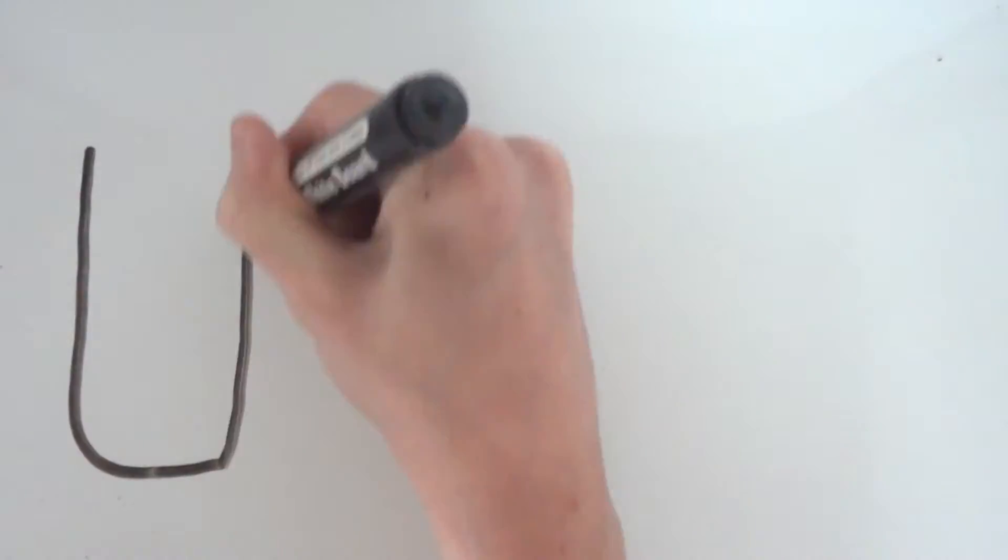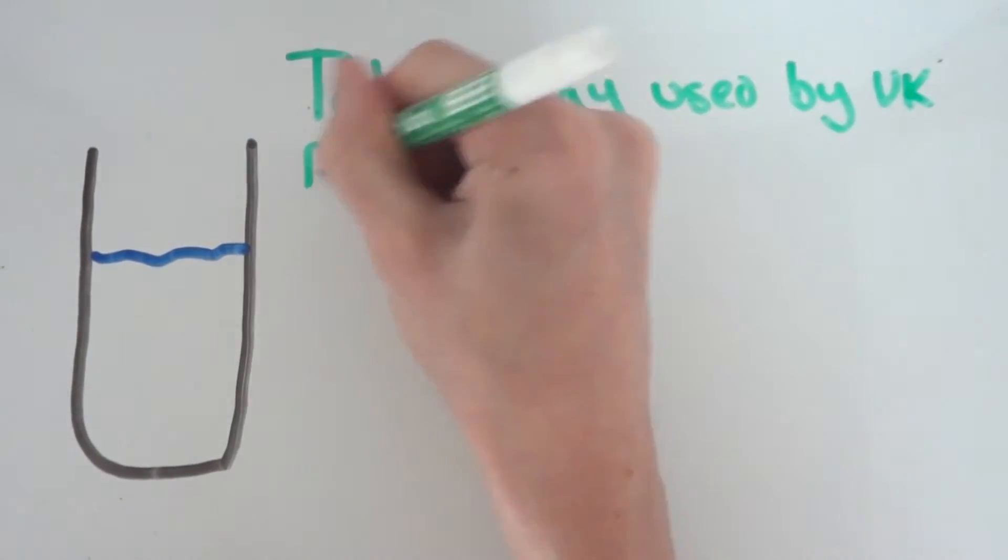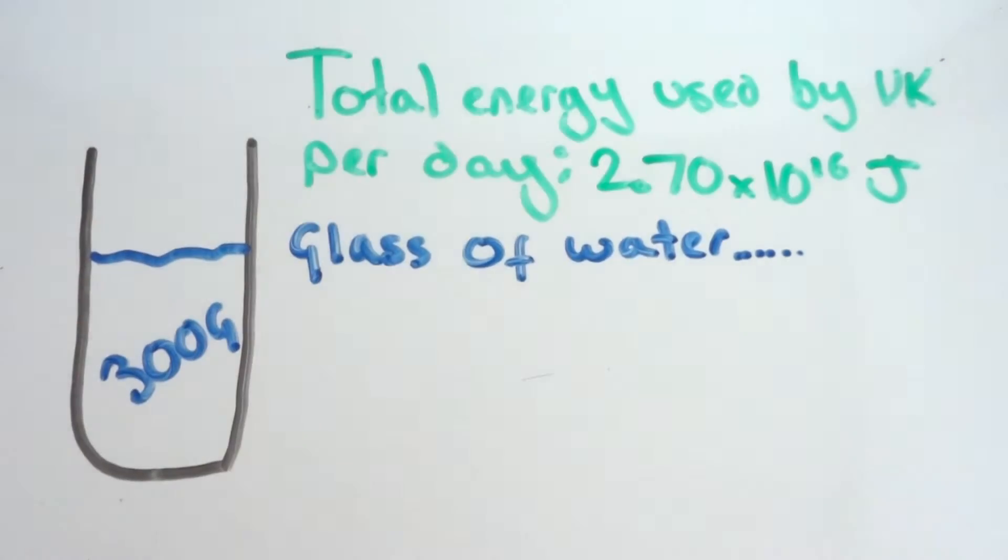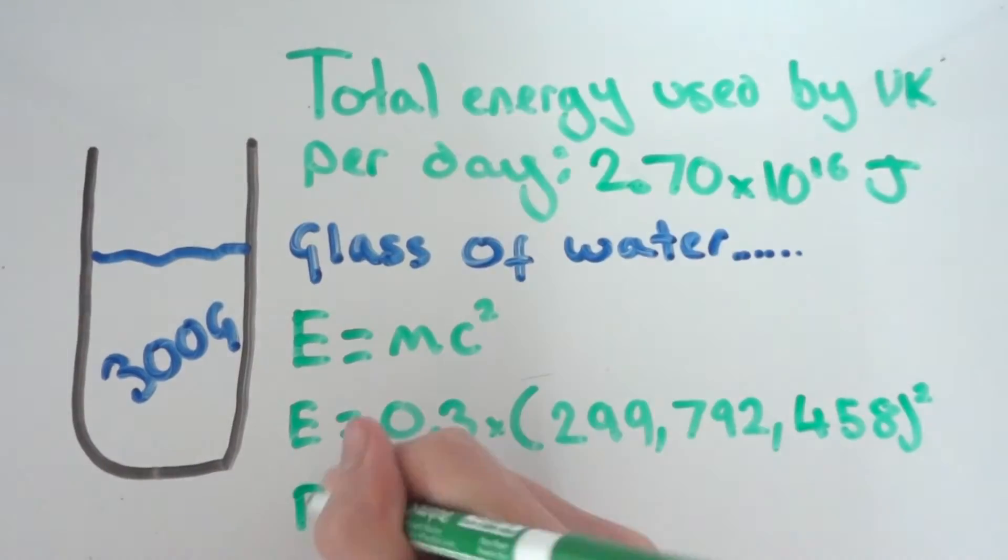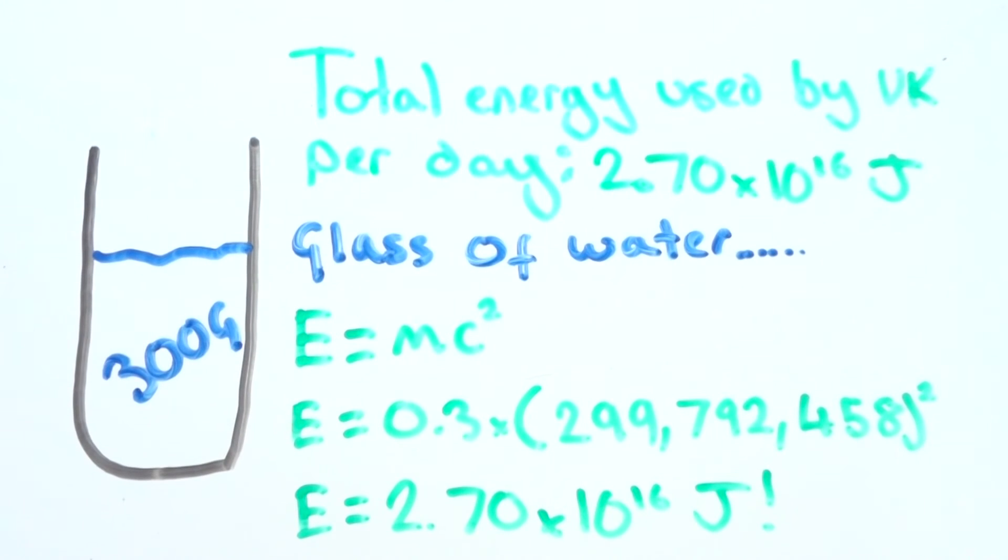There is also enough energy in a glass of water to power the whole of the United Kingdom for a day, which might seem surprising, but here's the proof. The problem though is how to get the energy out of the 300 grams of water. The first atomic bomb load had 600 grams of mass and ended up having enough energy to destroy a whole city.